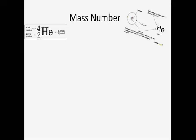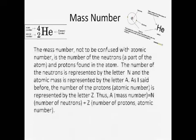The mass number. The mass number, not to be confused with the atomic number, is the number of the neutrons, a part of the atom, and protons found in the atom. The number of the neutrons is represented by the letter N, and the atomic mass is represented by the letter A.